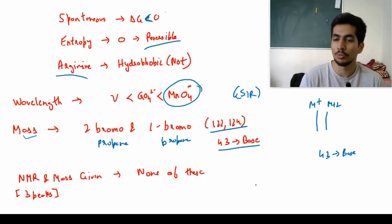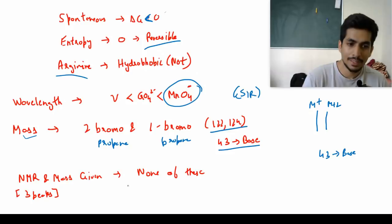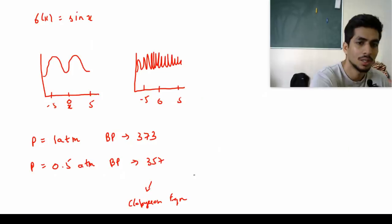Then NMR and mass data was given to us and there were four molecules given like ethyl methyl ketone and acetaldehyde - some very simple molecules. It's a very easy question and for that the answer was none of these.